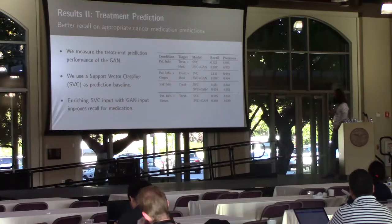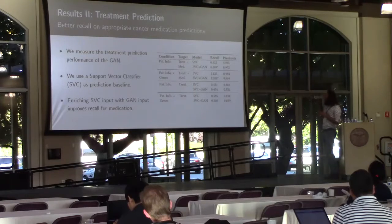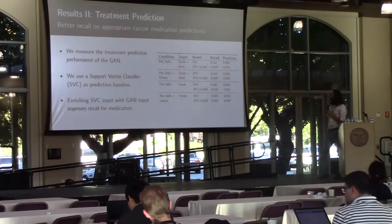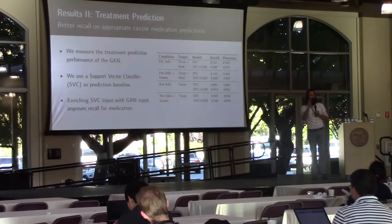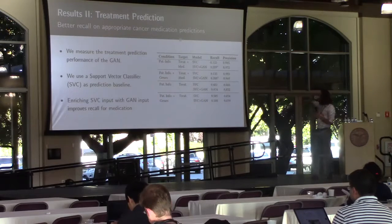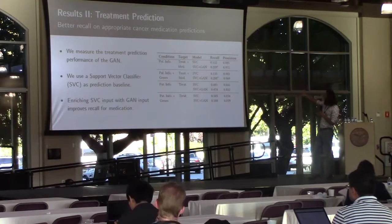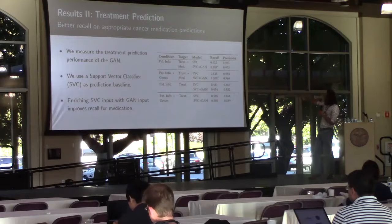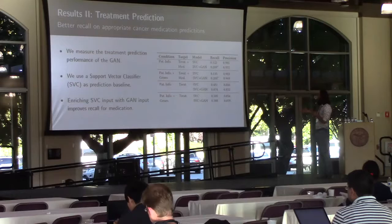For the second case — treatment prediction — we're looking at two scenarios. The first two rows show predicting treatments together with the specific medication, so not just the class of treatment but the concrete drug — a much harder problem, and the scores are much lower. Here you can see that the addition of GAN scores approximately doubles recall while keeping precision pretty static. For the easier treatment prediction problem at the bottom, it doesn't really do anything — numbers shift around a bit but it doesn't get better or worse.